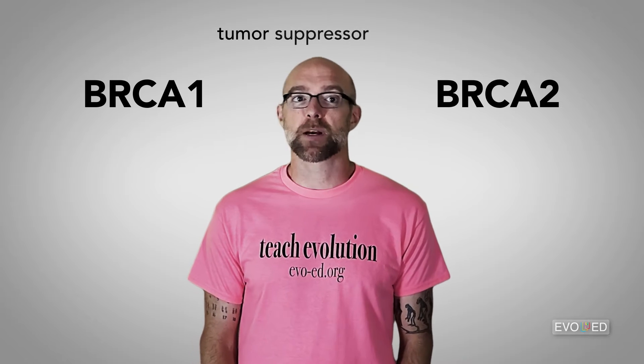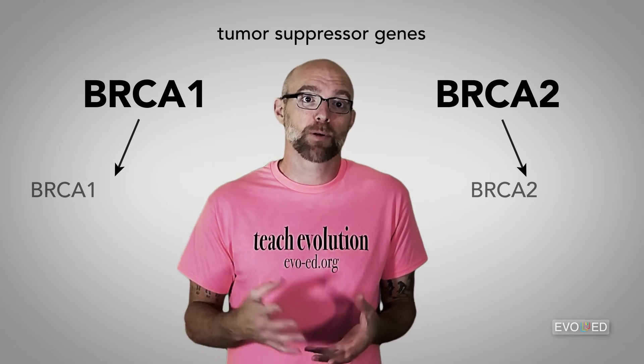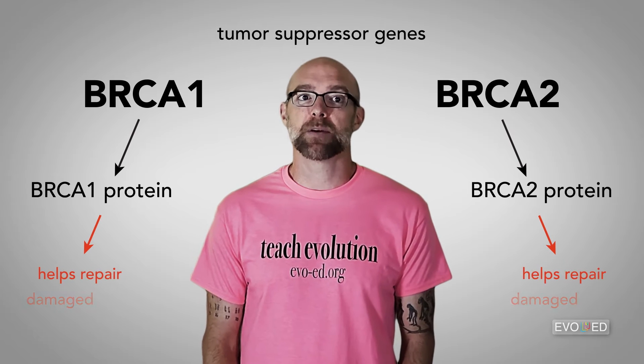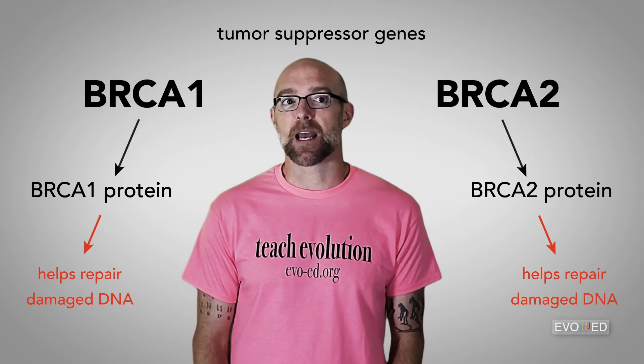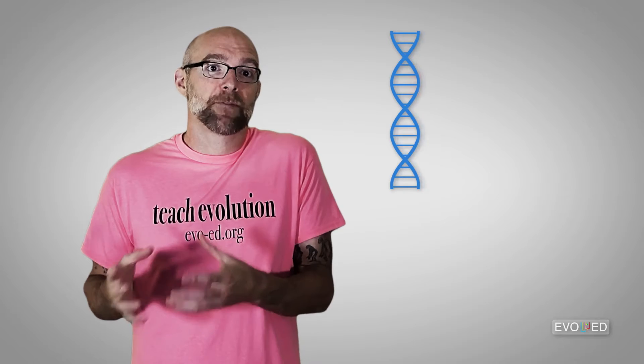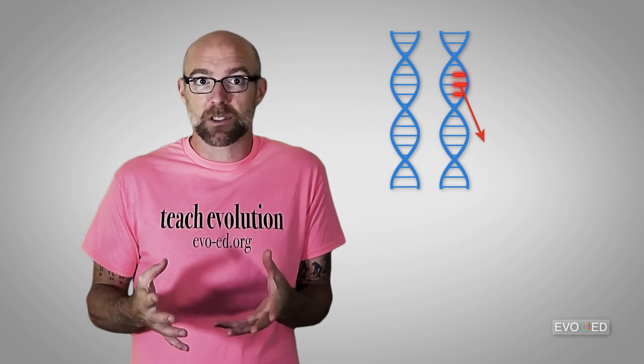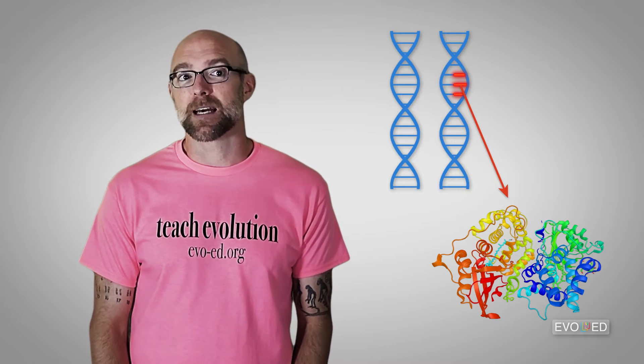These genes are both tumor suppressor genes. They code for proteins that play a role in repairing damaged DNA. So you can imagine that if there's a mutation in a BRCA gene that ultimately changes the shape of the resulting protein, then it could be a lot less effective in repairing DNA.